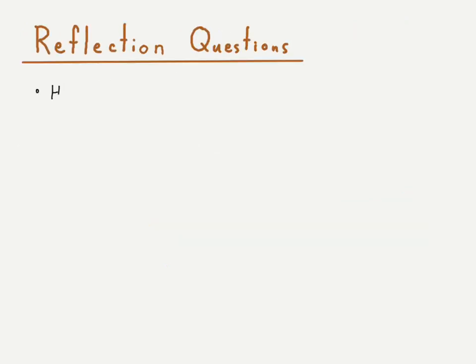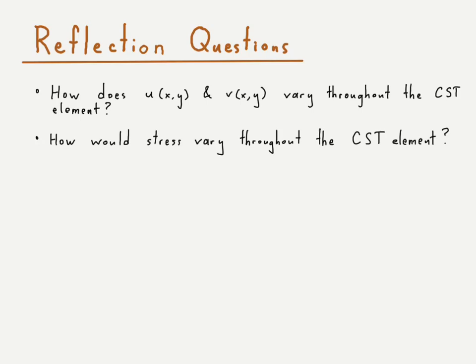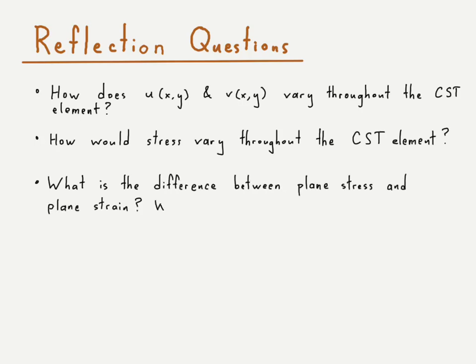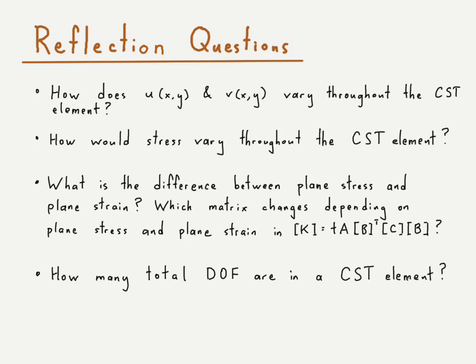The video concludes with reflection questions: How do the displacements U and V vary throughout the constant strain triangle element? How does stress vary throughout the element? What is the difference between plane stress and plane strain, and which matrix in the stiffness equation changes depending on that assumption? Finally, how many total degrees of freedom are there in a constant strain triangle element?